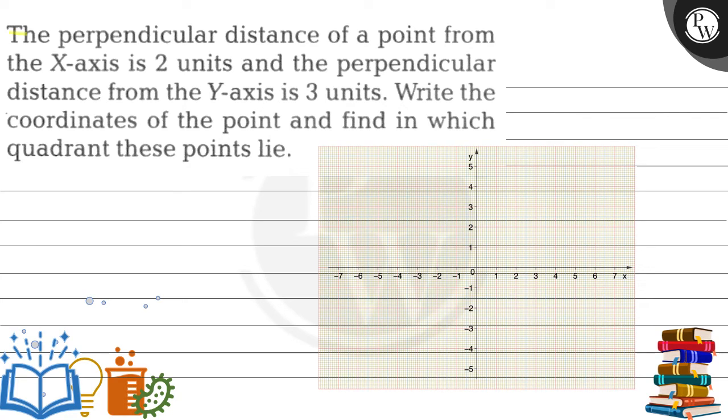Let's read the question. The question says the perpendicular distance of a point from x-axis is 2 units and the perpendicular distance from the y-axis is 3 units. Write the coordinates of the point and find in which quadrant these points lie.